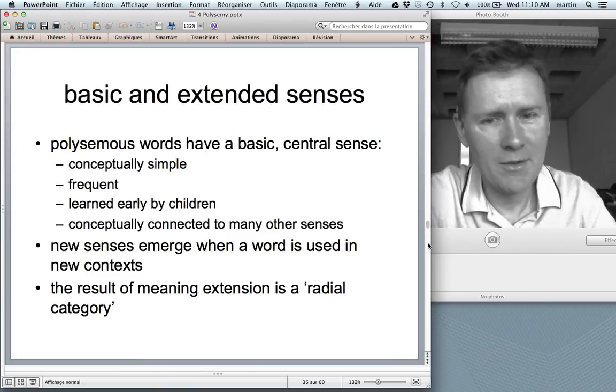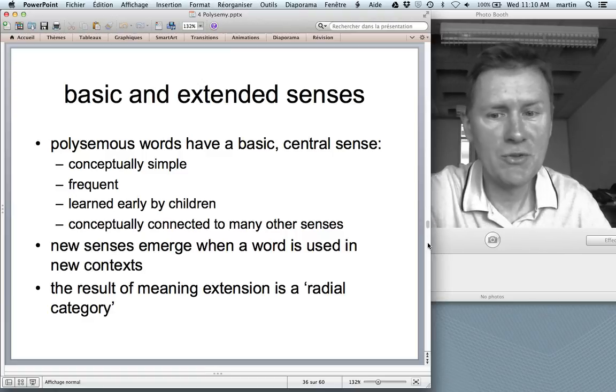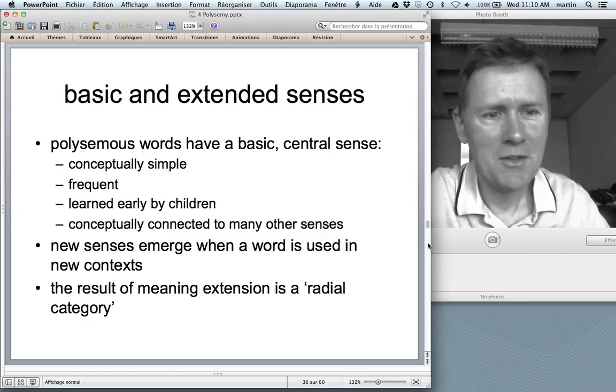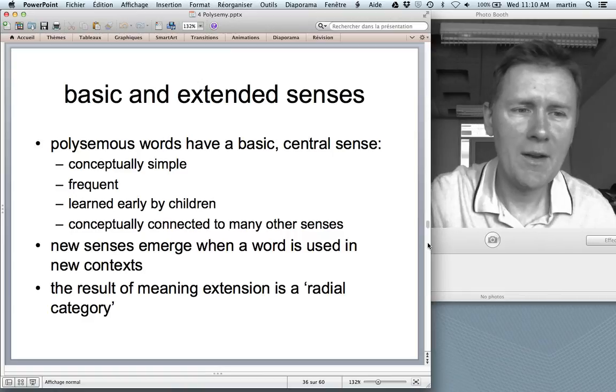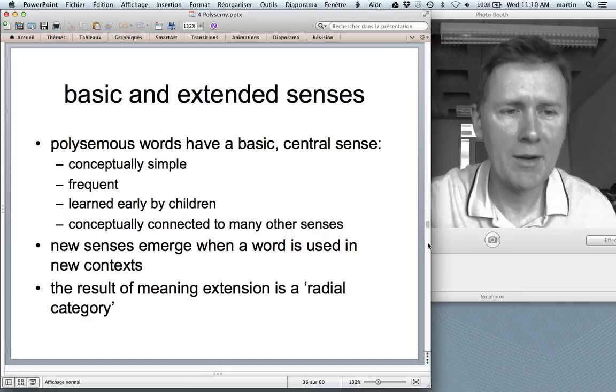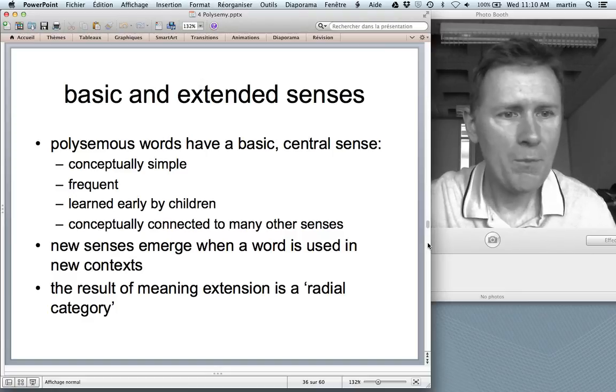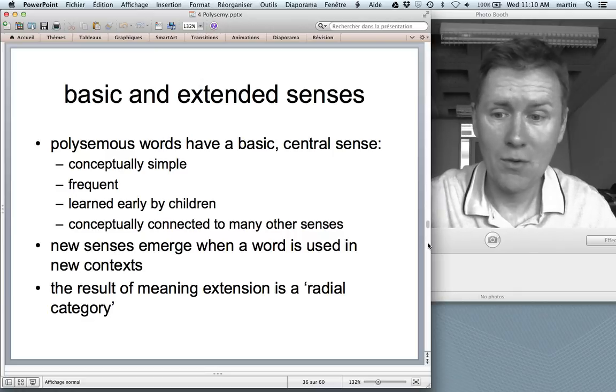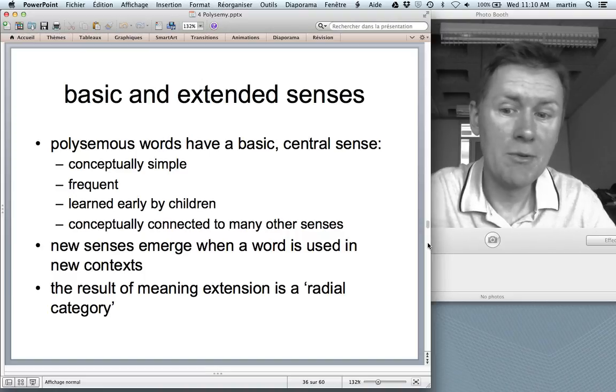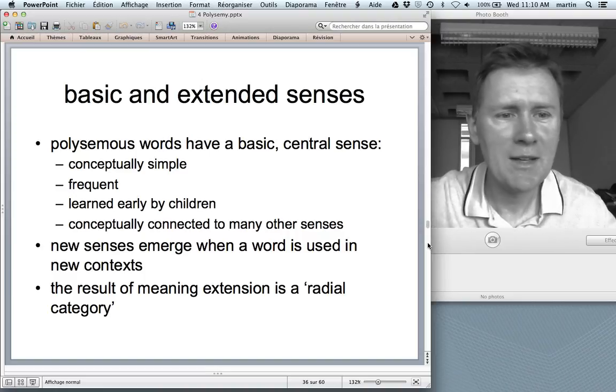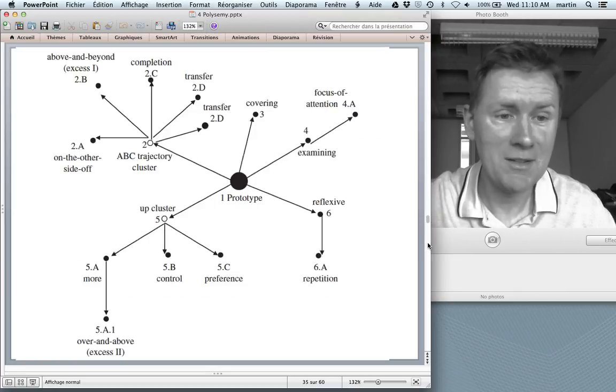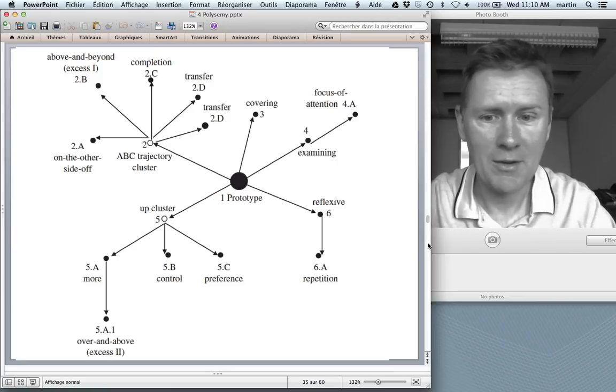How do we get to these networks? How do new senses emerge? They emerge when a word is used in new contexts. So if you use a word like over in scenarios that haven't been used before, but they're still recognizable as being a case of over. They relate to earlier meanings of over. And so new senses can, over time, establish themselves. And the result of these kinds of successive meaning extensions is then called a radial category. Radial because, well, the meanings sort of radiate outward from a prototype.